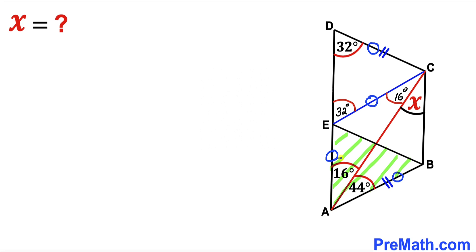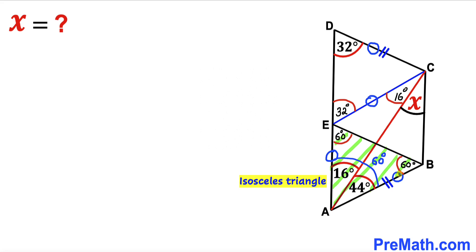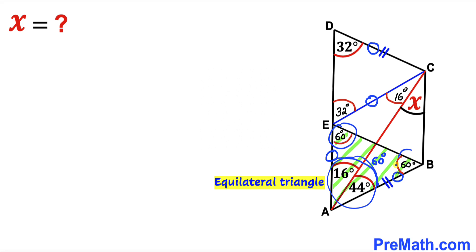Focusing on triangle ABE, adding 16 degrees plus 44 degrees gives us 60 degrees. This is also an isosceles triangle since these two side lengths are equal, so these two angles are equal. Since this angle is 60 degrees, all three angles must be 60 degrees each — this is an equilateral triangle and all three sides are congruent, including side EB.